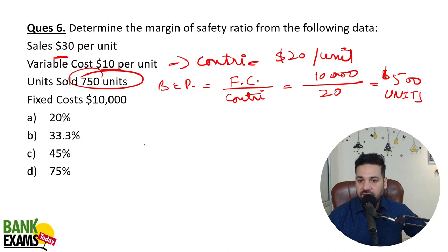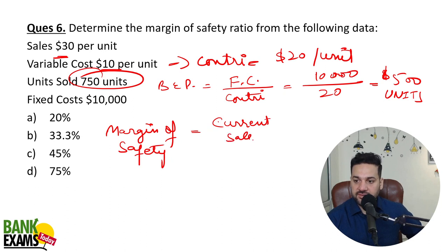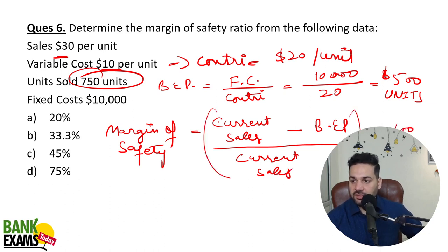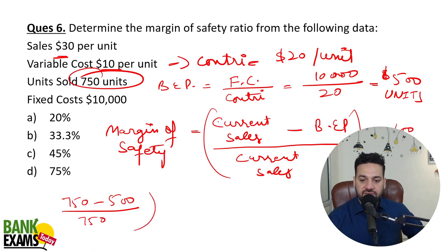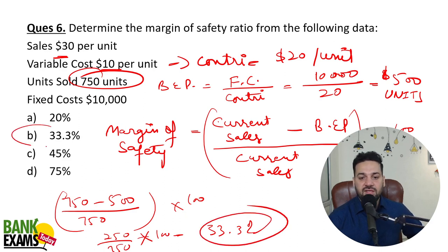You got the break-even point of 500 units and actual sales of 750 units. The formula to calculate the margin of safety is: current sales minus break-even point divided by current sales, multiplied by 100. So (750 minus 500) divided by 750 multiplied by 100 = 33.3%. That is the correct answer — option B.